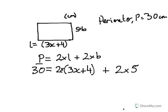Here's our first equation for working out the perimeter, and now we can expand our brackets. 2 times 3x is 6x, 2 times plus 4 is plus 8, plus 2 times 5 is 10.